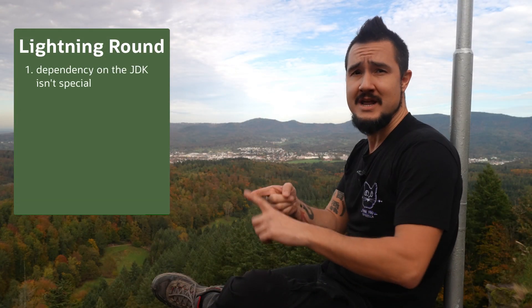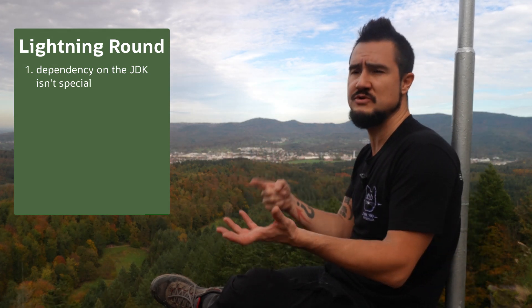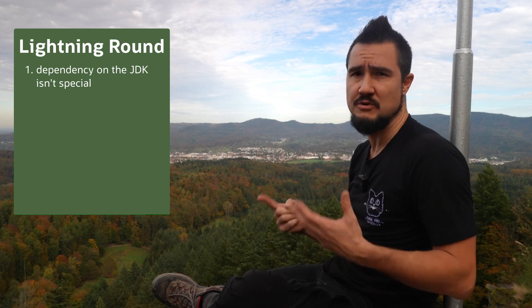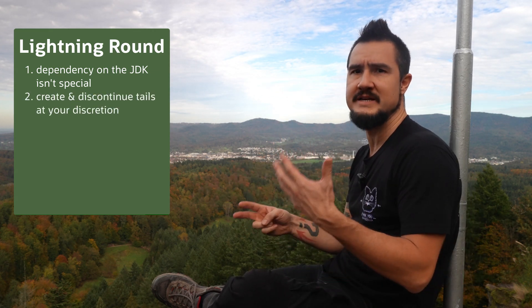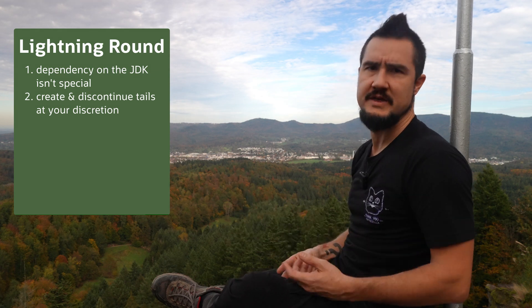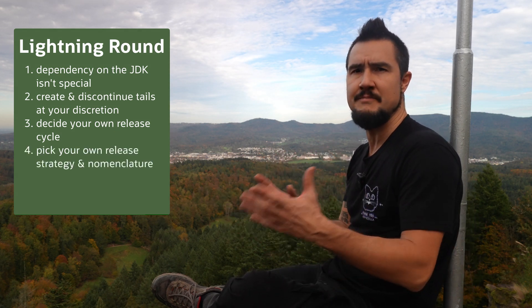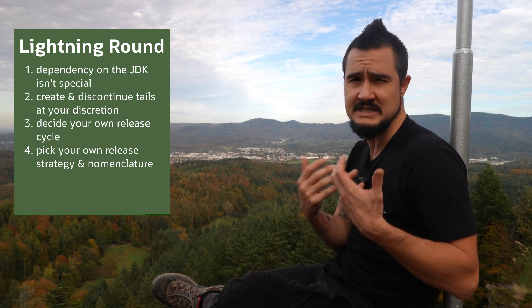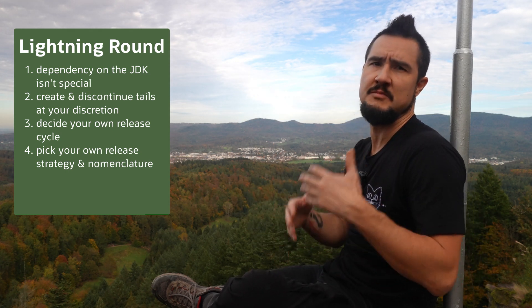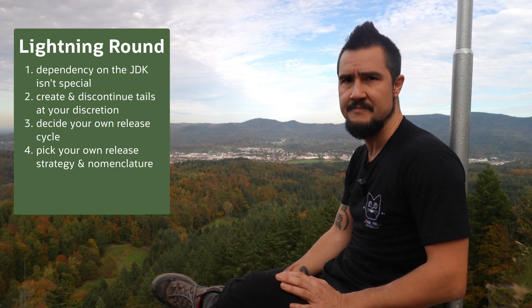Lightning round. One: what I said about depending on the JDK tip versus tail — when to move on and not jump through hoops to support multiple versions — also applies to a project's other dependencies. Two: tip and tail does not specify when or why tail trains are created, nor when or why they're discontinued. Three: tip and tail does not constrain a library's release cycle. Four: tip and tail does not dictate a versioning numbering scheme — it says nothing about semantic versioning, nothing about the use of alpha, beta, or release candidate labels, or any other metadata about the library.